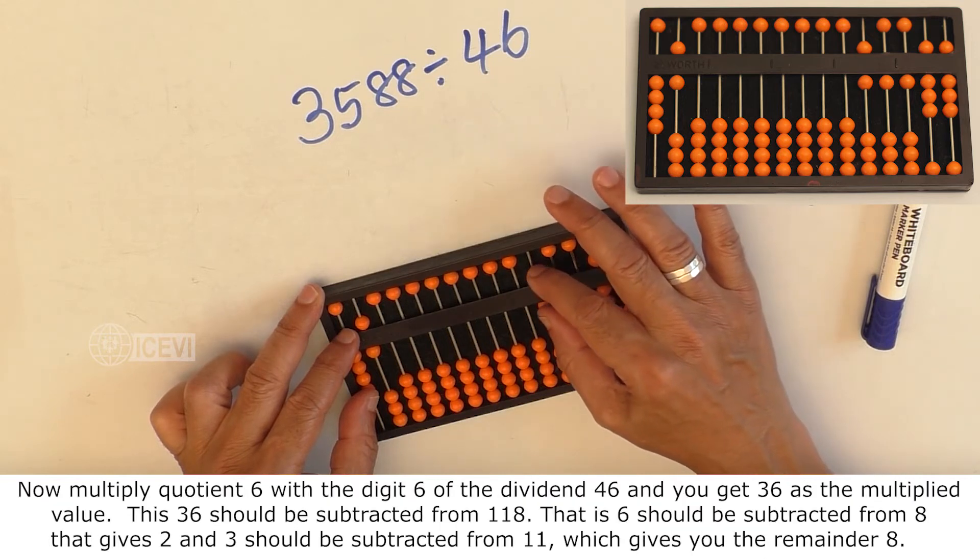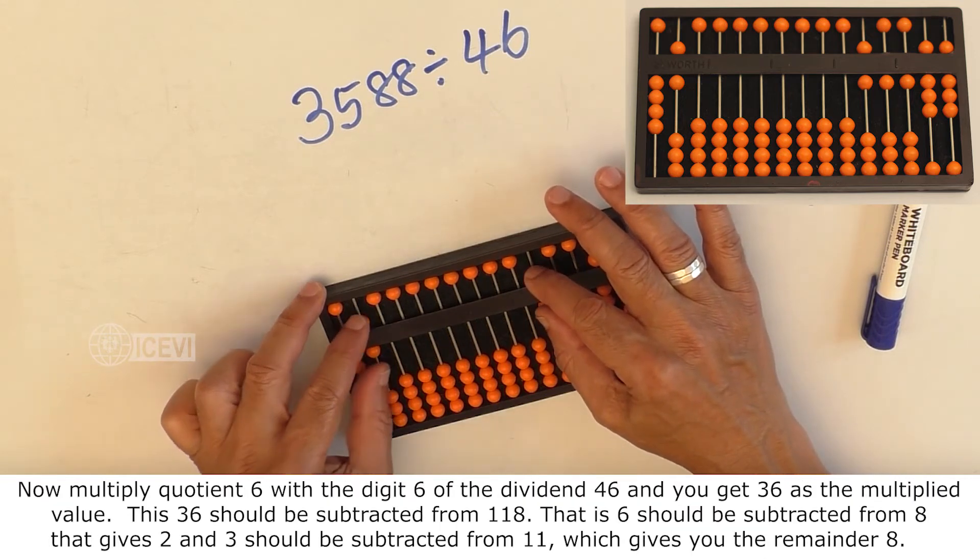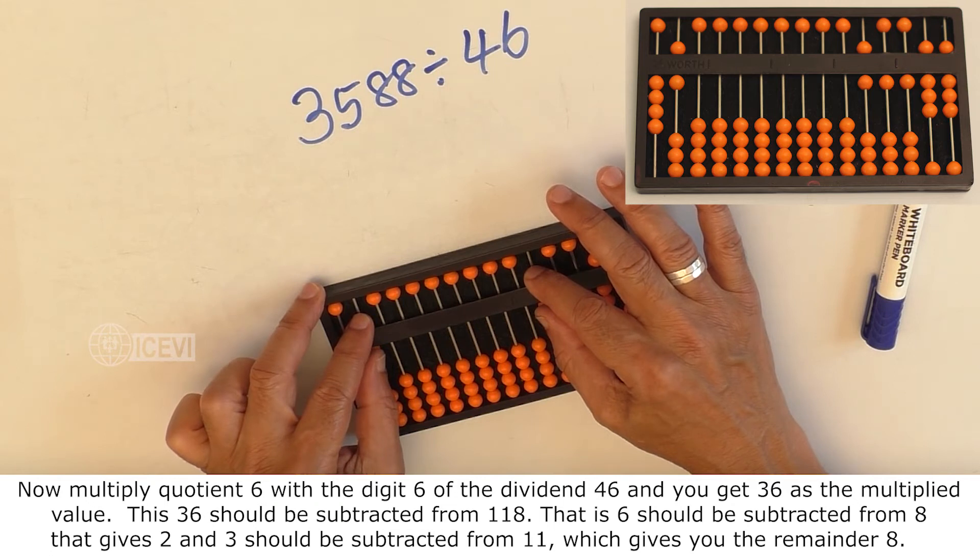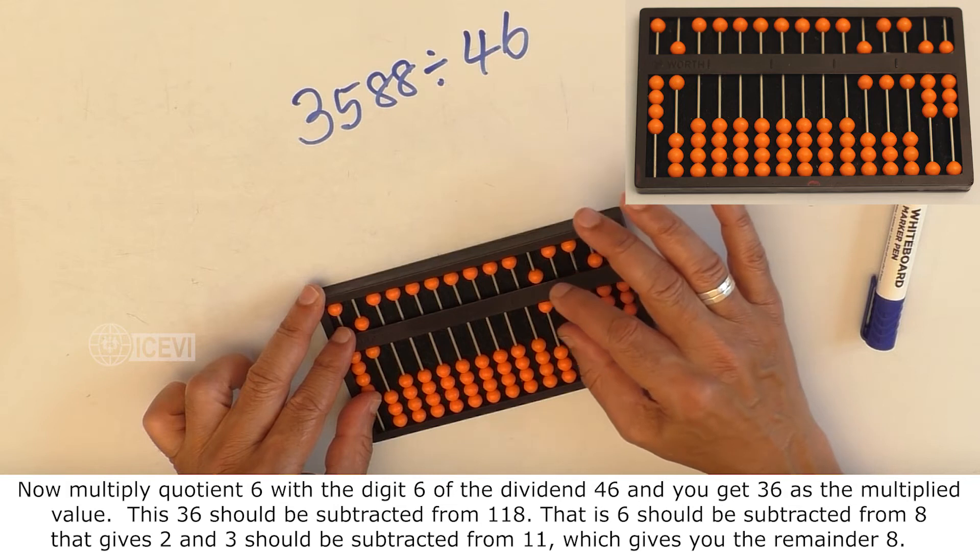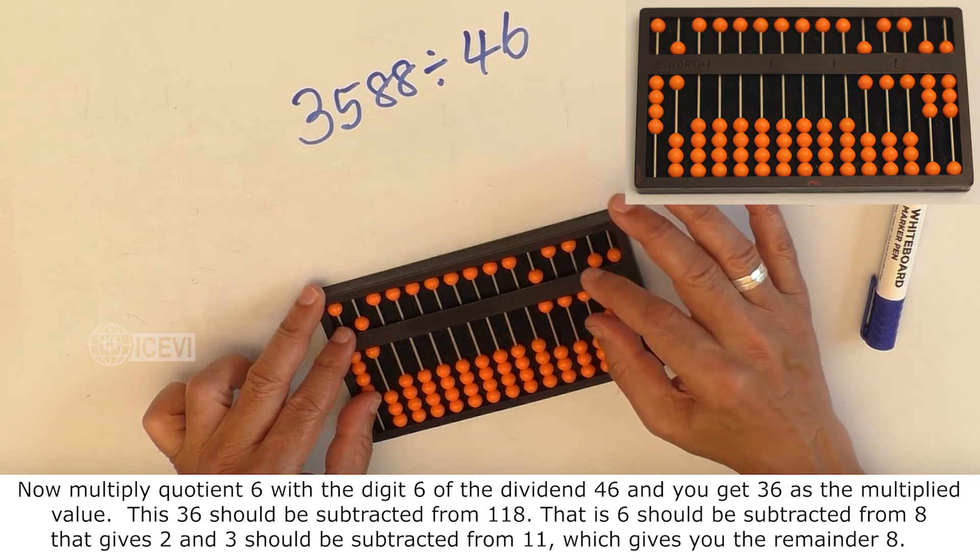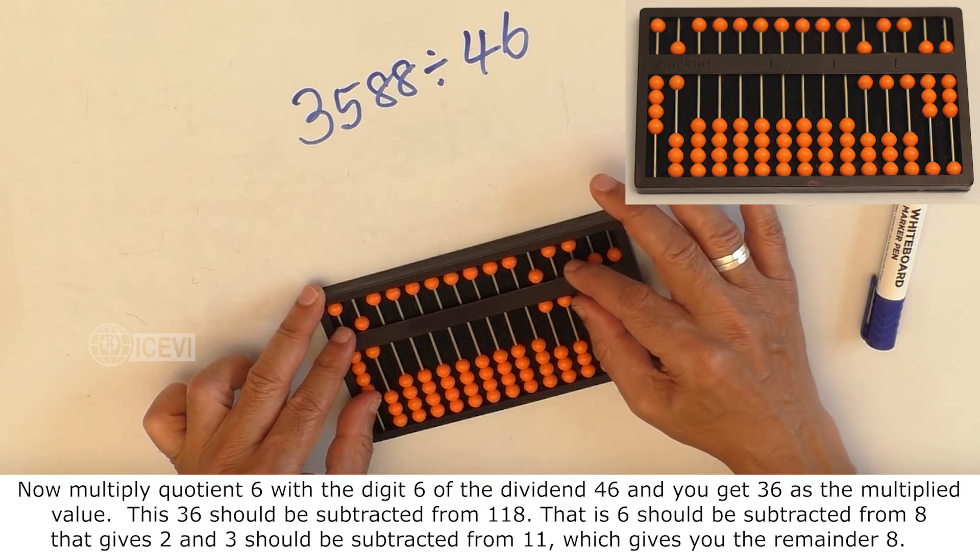Now multiply 6 with the digit 6 of the dividend 46. You get 36 as the multiplied value. This 36 should be subtracted from 1, 1, 8.